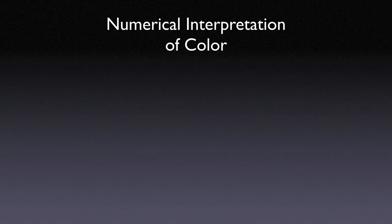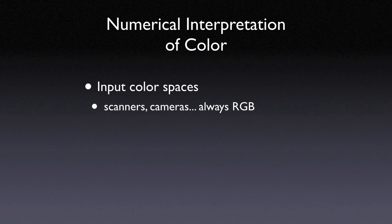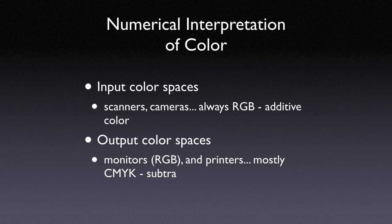There are two device-dependent ways of representing color for digital images and two scenarios for color display where the numerical interpretation of color comes into play: input color spaces — scanners and cameras, which always capture an RGB additive color space — and output color spaces, which are monitors and printers. Monitors are still RGB, but printers are most often some kind of CMYK color space, which is a subtractive color space.